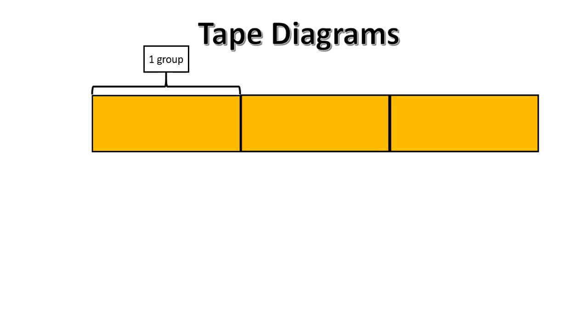Here we see that one segment or box of this tape diagram represents one group. There are three boxes or segments in this tape diagram. Three groups make up the whole. All three groups together are considered the whole.